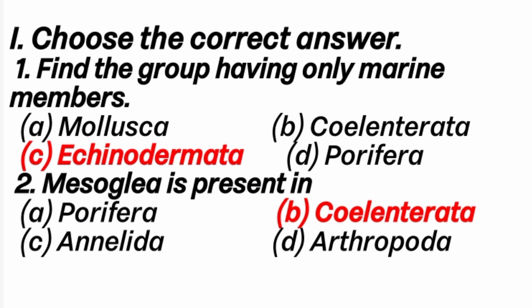First question: find the group having only marine members. Answer is C option, Echinodermata. Because Mollusca, Coelenterata and Porifera animals live in both marine and also fresh water. But Echinodermata only live in marine water. That's why the answer is Echinodermata.